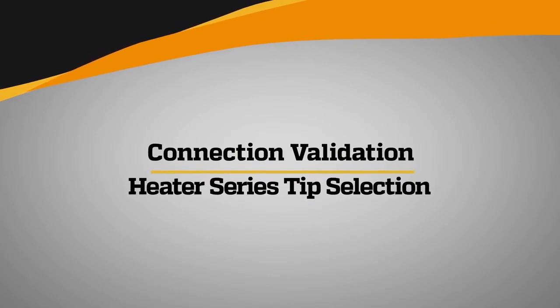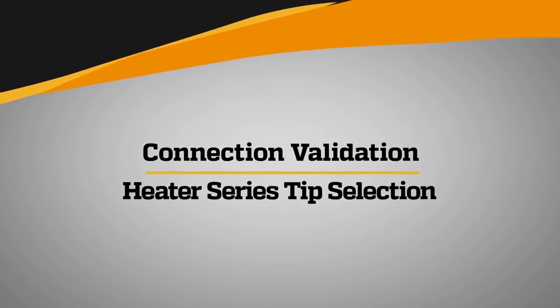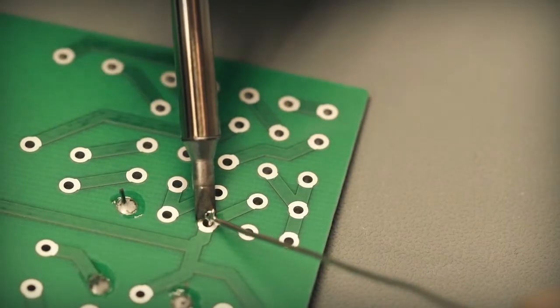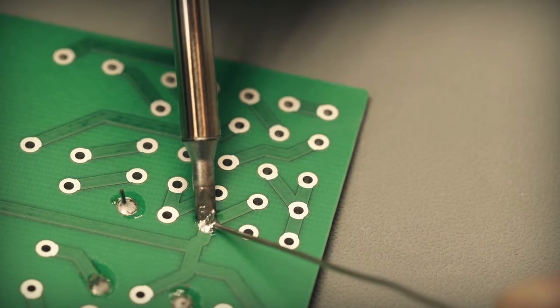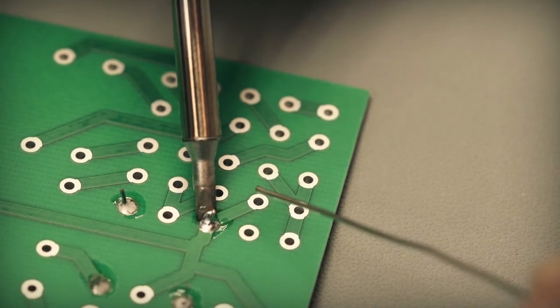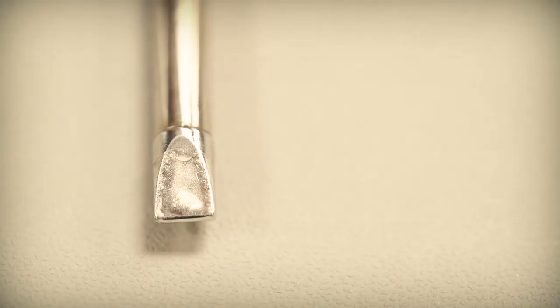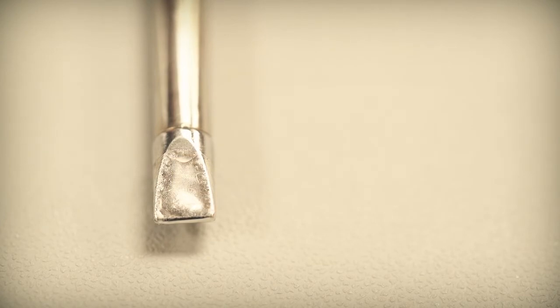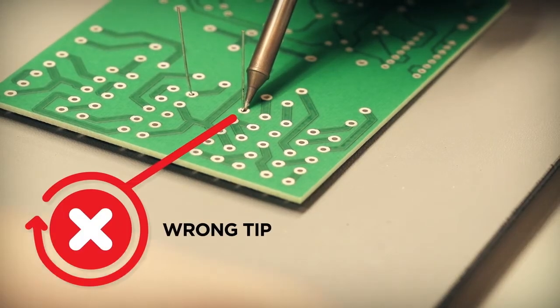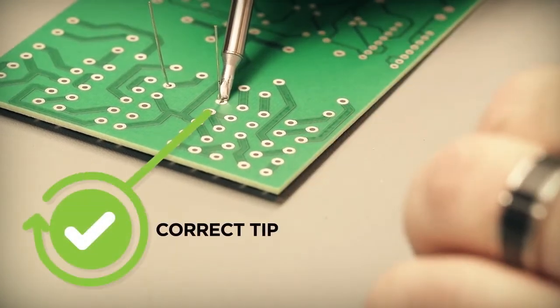Selecting the correct tip geometry and heater series for the application is a basic component of the soldering process and is essential for efficient soldering. Pick a solder tip geometry that maximizes contact with the connection. A flat blunt tip will transfer more heat than a fine pointed tip. Choosing the largest tip possible will improve performance and enhance tip life.